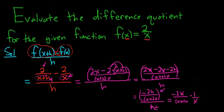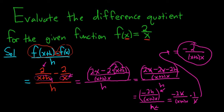The h's cancel, and we end up with negative 2 over x plus h times x. And that's the difference quotient. I hope that helped.